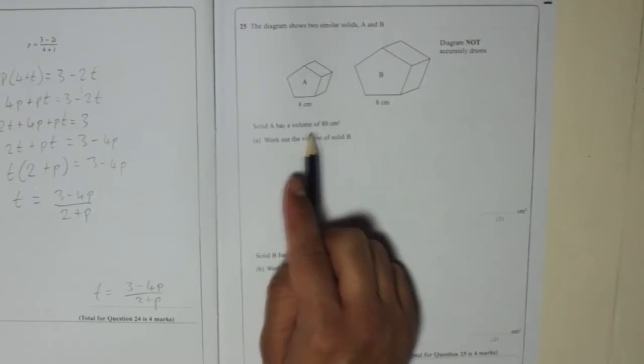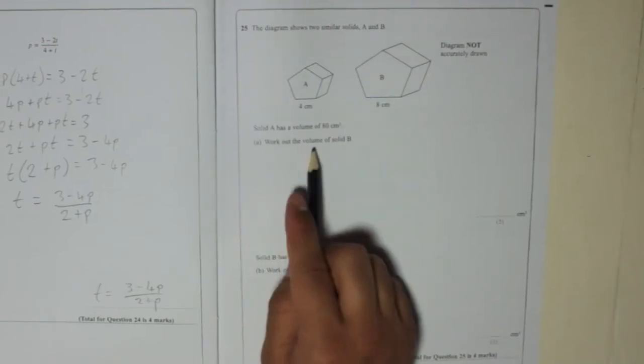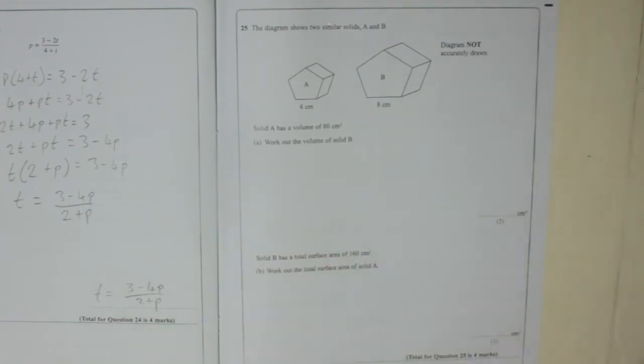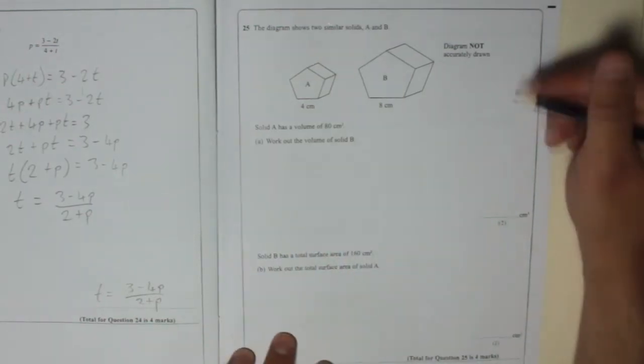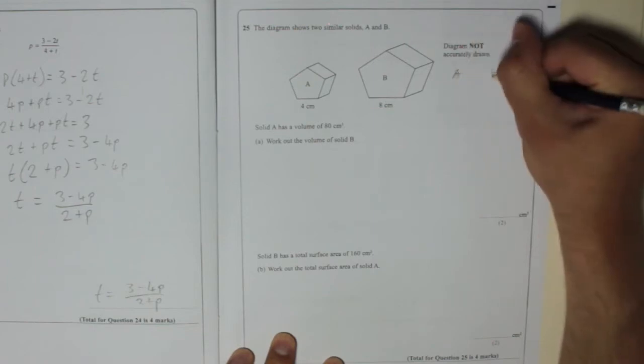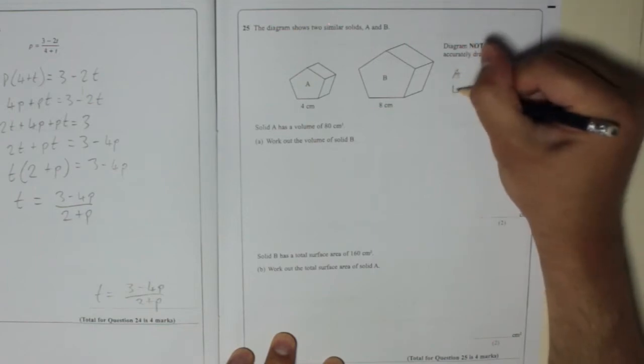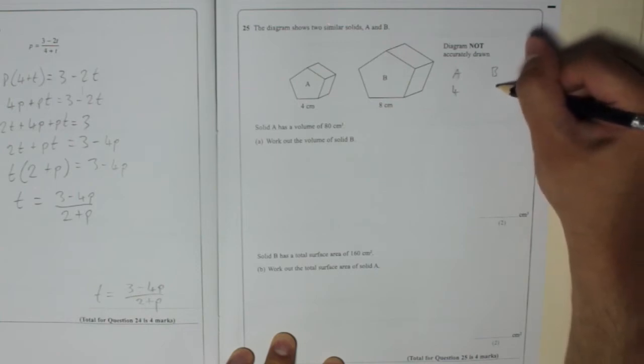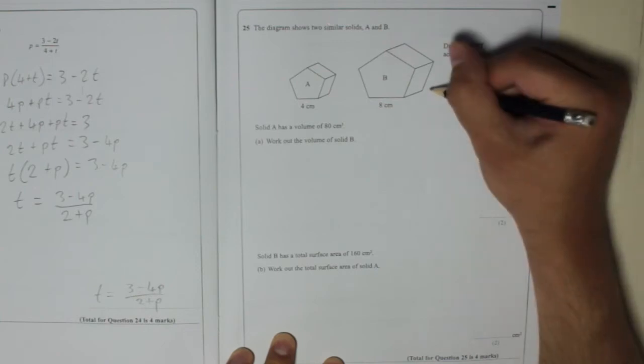Solid A has a volume of 80 centimetres cubed. Work out the volume of solid B. The way scale factors work, if A is 4, then the length of something on B is 8.